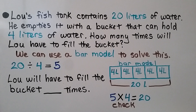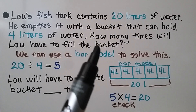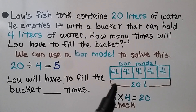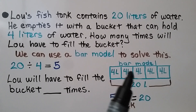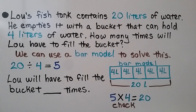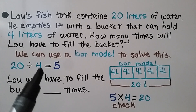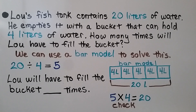Lou's fish tank contains 20 liters of water. He empties it with a bucket that can hold four liters of water. How many times will Lou have to fill the bucket to empty the fish tank of all 20 liters? We can use a bar model: the whole fish tank contains 20 liters, with groups of four liters each. Twenty divided by four liters equals five, so Lou will have to fill the bucket five times.